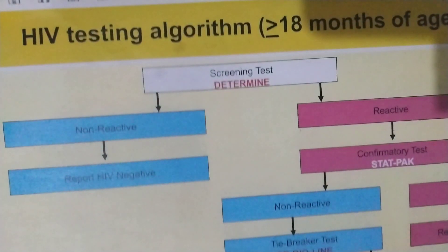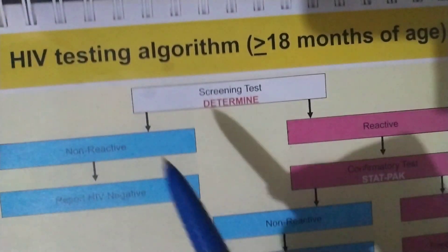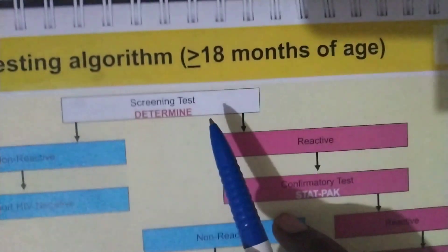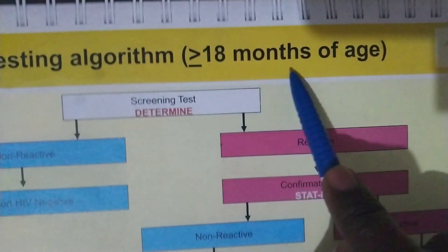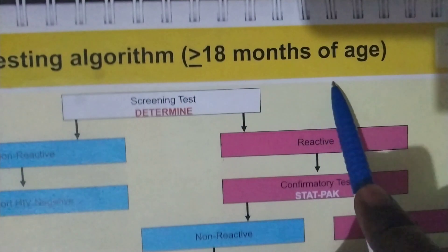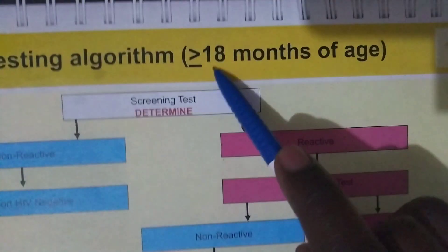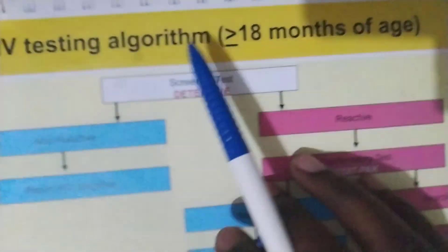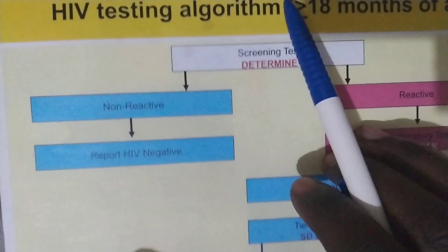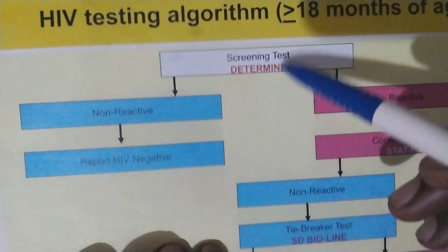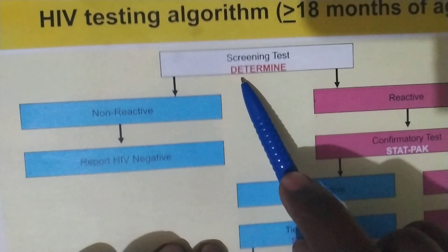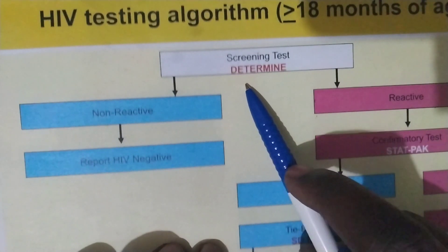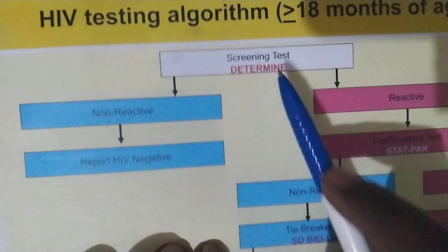Welcome back. Today we are going to see the HIV testing algorithm for people 18 months of age and above. The starting point of testing is Determine — this is the test strip we use for Determine.